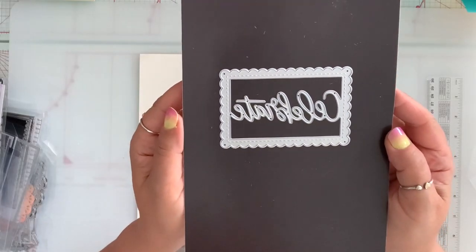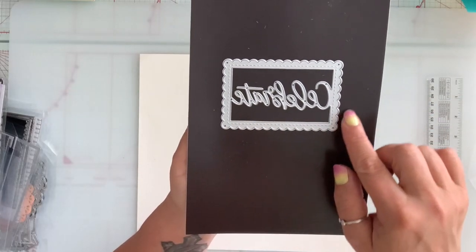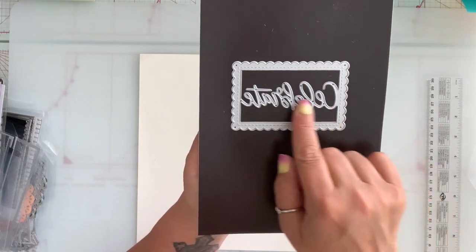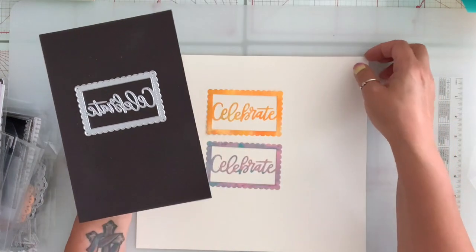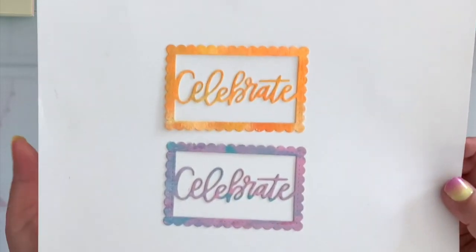Next, I have this die here and this cuts out this scalloped rectangle and there is the word celebrate in the middle that's attached. And this is what it looks like.